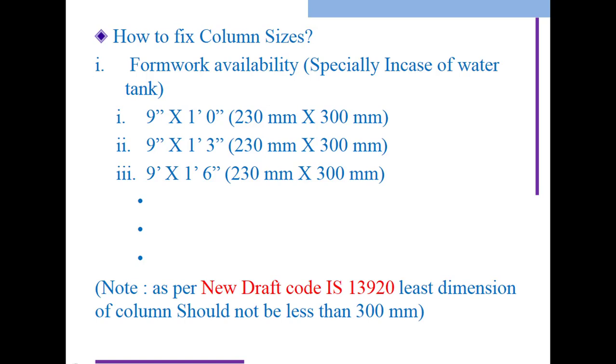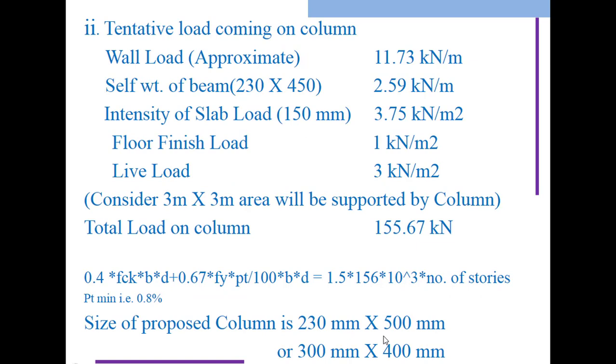How to fix column sizes is a major question. Formwork availability, especially for water tanks, determines options. Major column sizes are 9 inches by 1 foot (230 by 300 mm), 230 by 400 mm, 230 by 600 mm. Note that as per the new draft code IS 13920, the least dimension of column should not be less than 300 mm, because wall thickness is 300 mm.